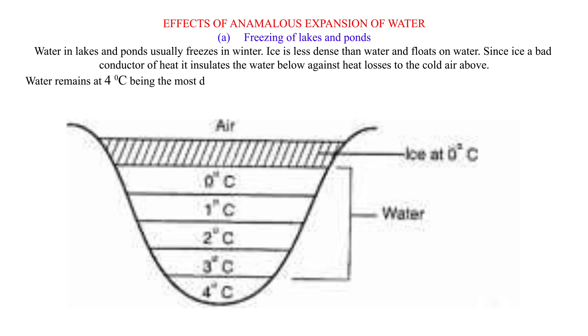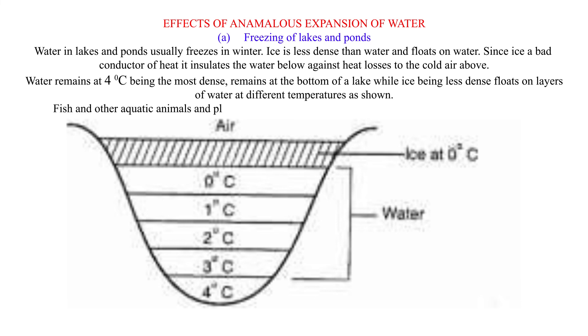Water at 4 degrees Celsius, being the most dense, remains at the bottom of a lake while ice, being less dense, floats on layers of water at different temperatures as shown. Fish and other aquatic animals and plants can therefore survive by living in the liquid layers below the ice.